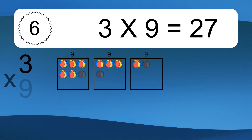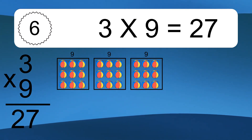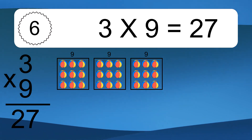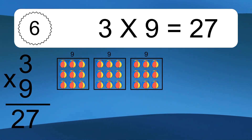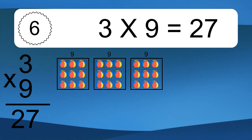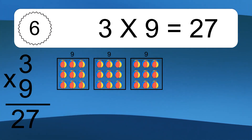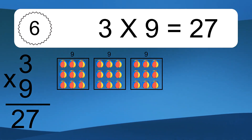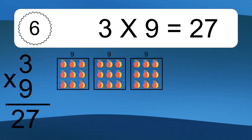3 times 9 equals 27. We have 3 boxes and each box has 9 colorful balls inside. If you count all the balls in all the boxes together, you will have 3 times 9 balls. This equals 27 balls.